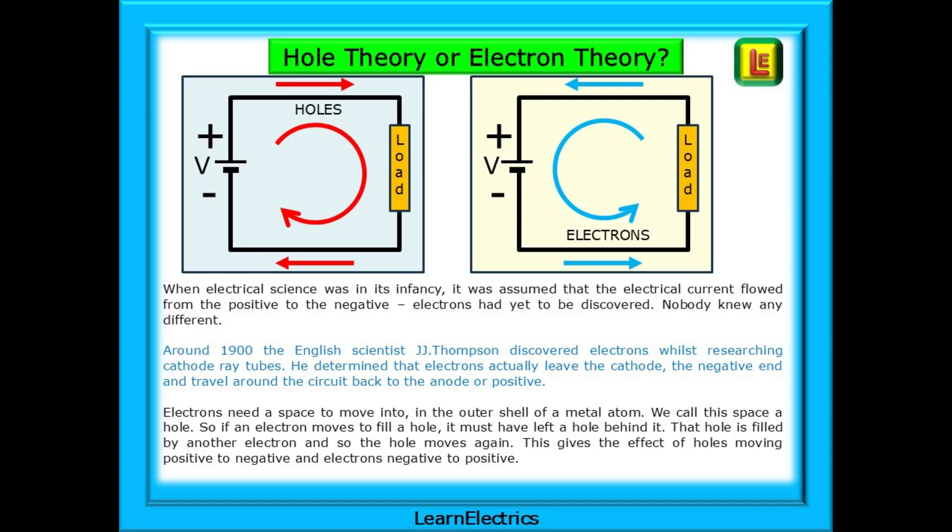Electrons need a space to move into in the outer shell of a metal atom. We call this space a hole. So, if an electron moves to fill a hole, it must have left a hole behind it. That hole is filled by another electron and so the hole moves again. This gives the effect of holes moving positive to negative and electrons negative to positive. This is the same effect as a queue of people at the cinema. If someone moves forward to take an empty seat, they leave a hole, a space, that the next person can step into. As they step forward to fill the space, they leave a hole behind and someone moves to fill that hole. The holes are moving to the back of the queue while the people, the electrons, are moving in the opposite direction.